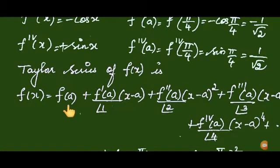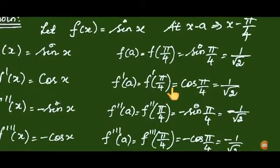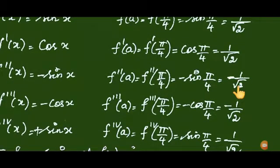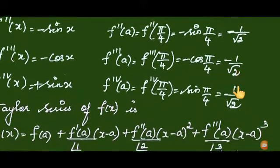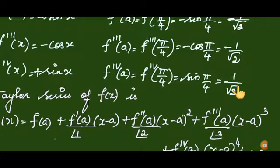Now substituting the obtained values — f of a equals 1 by root 2, f dash of a equals 1 by root 2, f double dash of a equals minus 1 by root 2, f triple dash of a equals minus 1 by root 2, and the fourth derivative of a equals positive 1 by root 2. Only the second and third derivatives carry a negative sign.